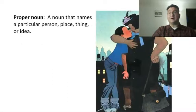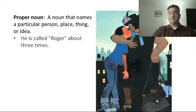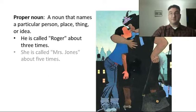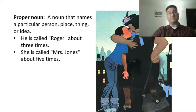On the other hand, proper nouns are a noun that names a particular person, place, thing, or idea. He's called Roger about three times in the story. It identifies him as one out of all the boys there are. She's called Mrs. Jones, or her full name, Miss Luella Bates Washington Jones, about five times.